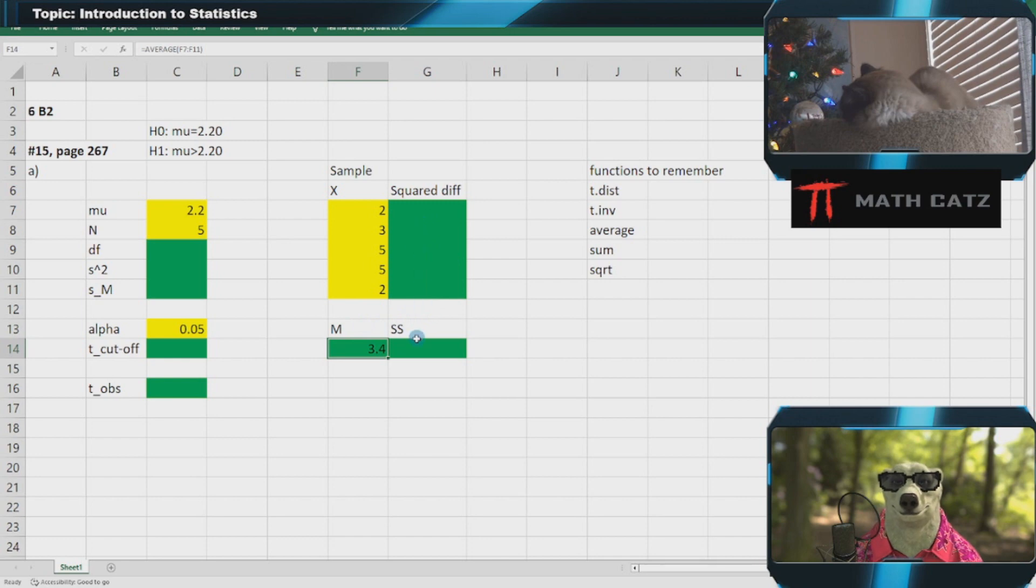Then I need to get an approximation for the variance, that's going to be my S squared. The degrees of freedom for my t distribution is one less than the sample size. I could have just put in 4, but I want to get used to this calculation in Excel.